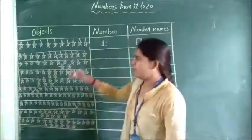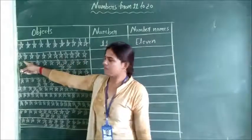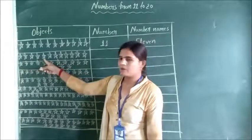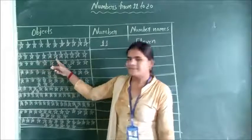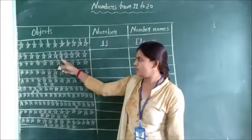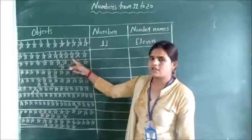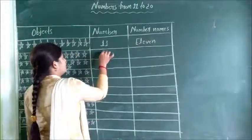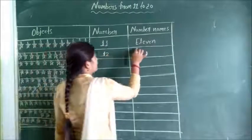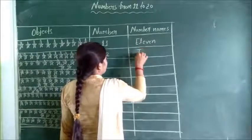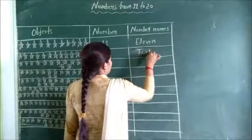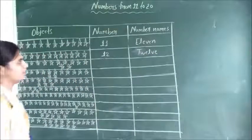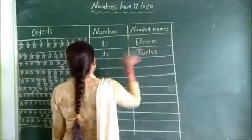Next. Let's count: 1, 2, 3, 4, 5, 6, 7, 8, 9, 10, 11, 12. How many stars? 12. So we will write here: 12 — T, W, E, L, V, E. Twelve. 12. Next.